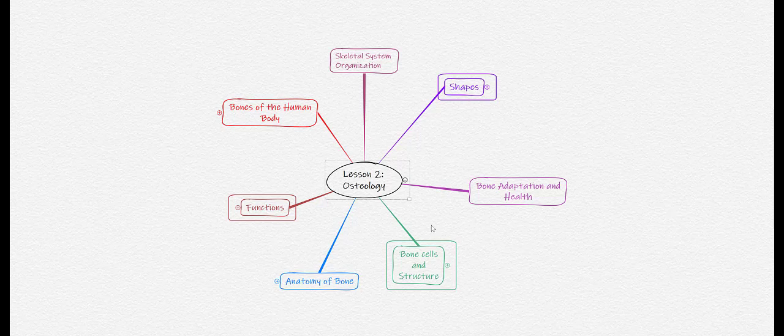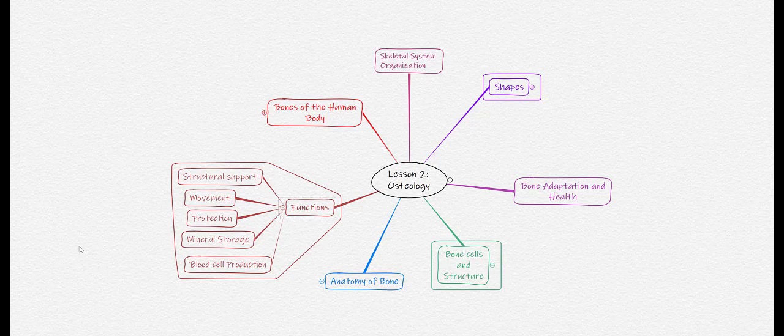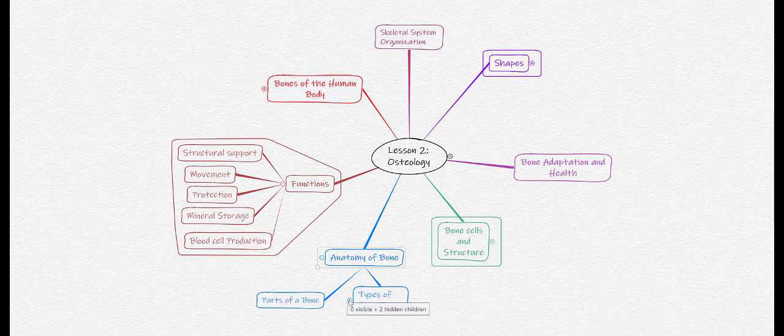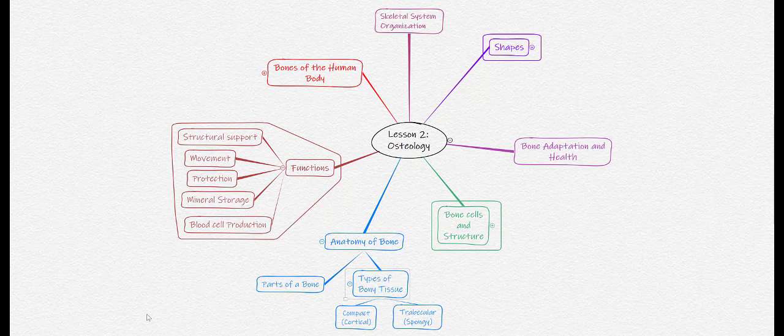We will begin by examining the functions of bone, which include structural support, movement, protection, mineral storage, and blood cell production. We will then examine the anatomy of bone, starting with the parts of the bone and the different types of bone tissue, including compact and trabecular bone. We will then zoom down and look at different types of bone cells, including osteoblasts, osteocytes, and osteoclasts.